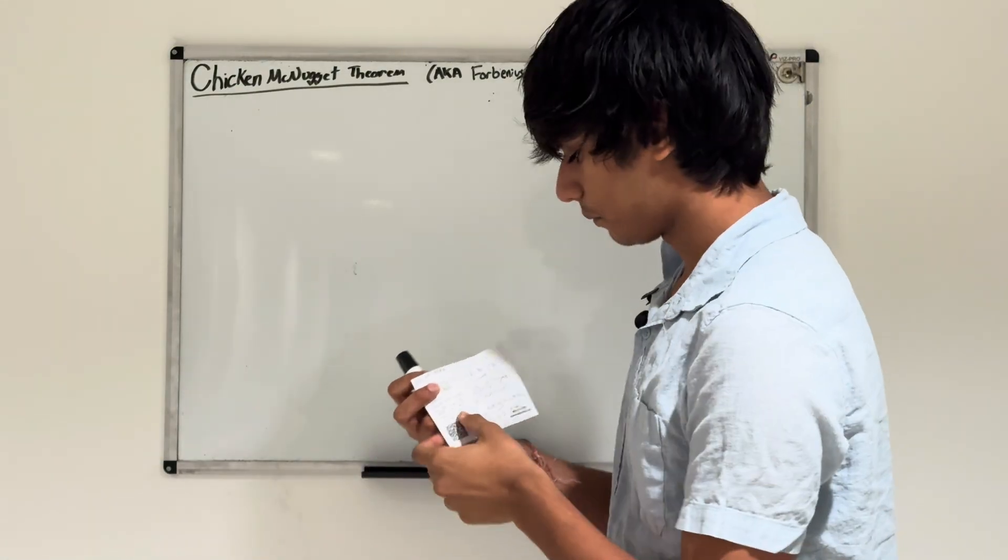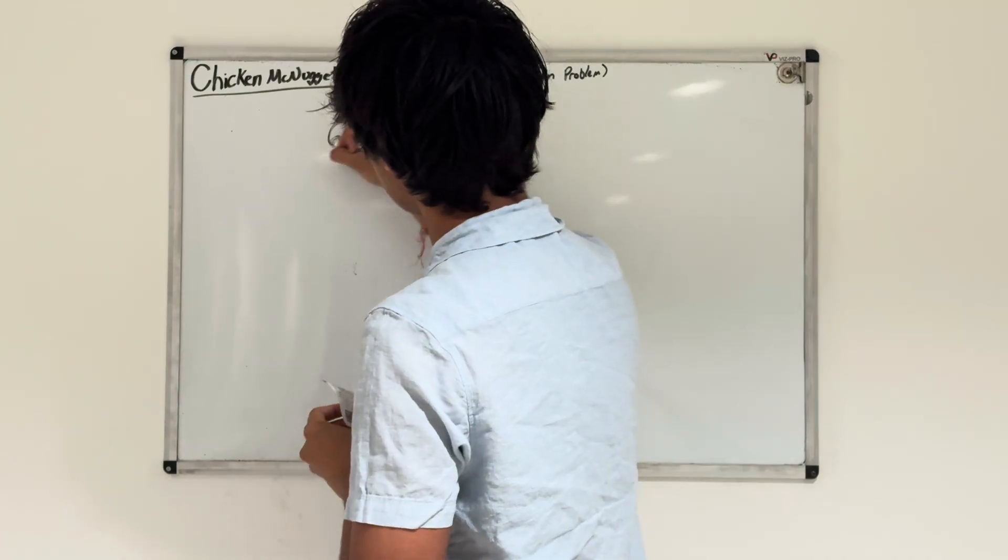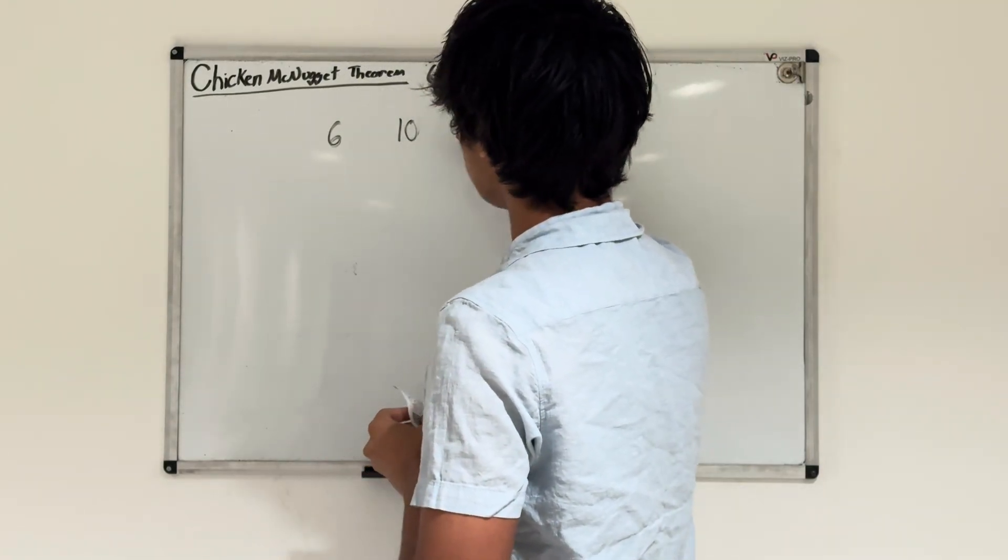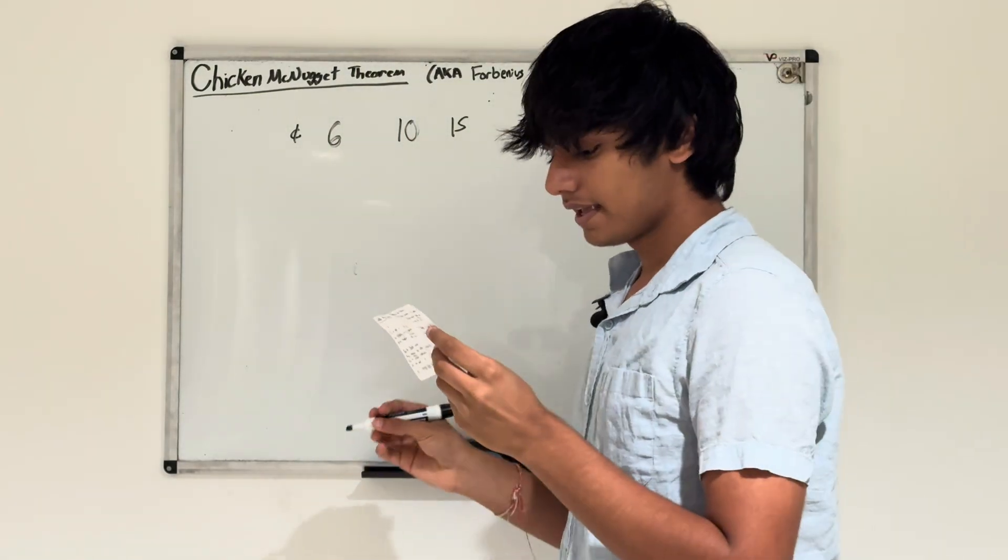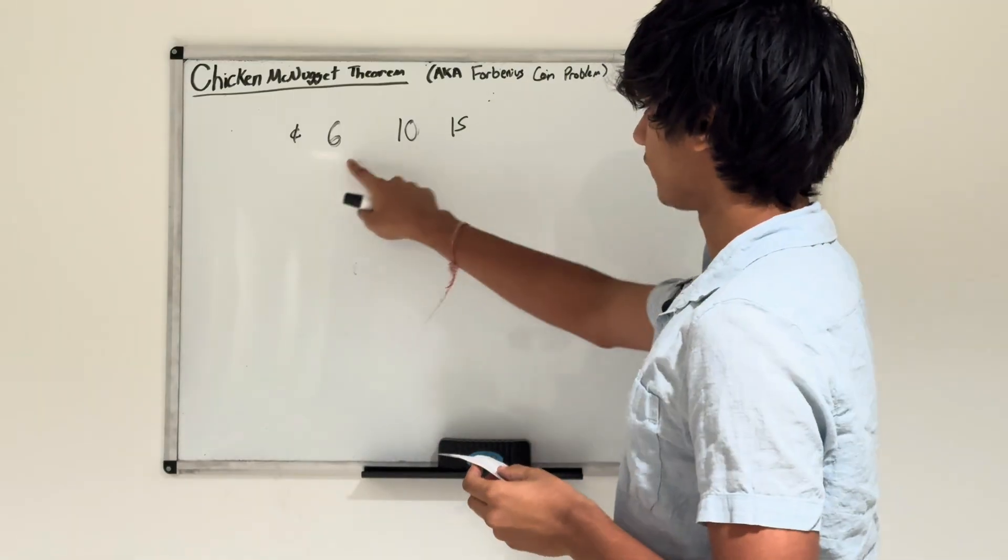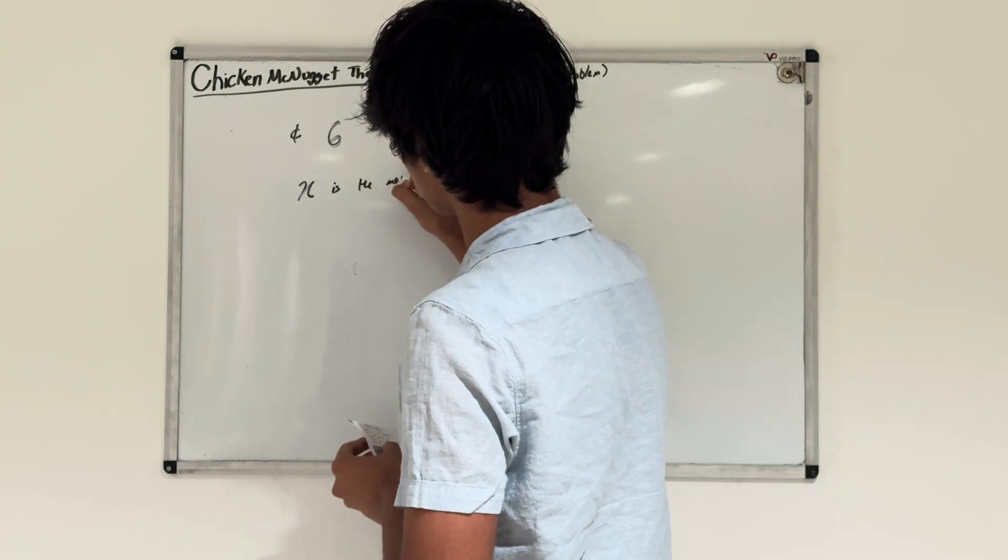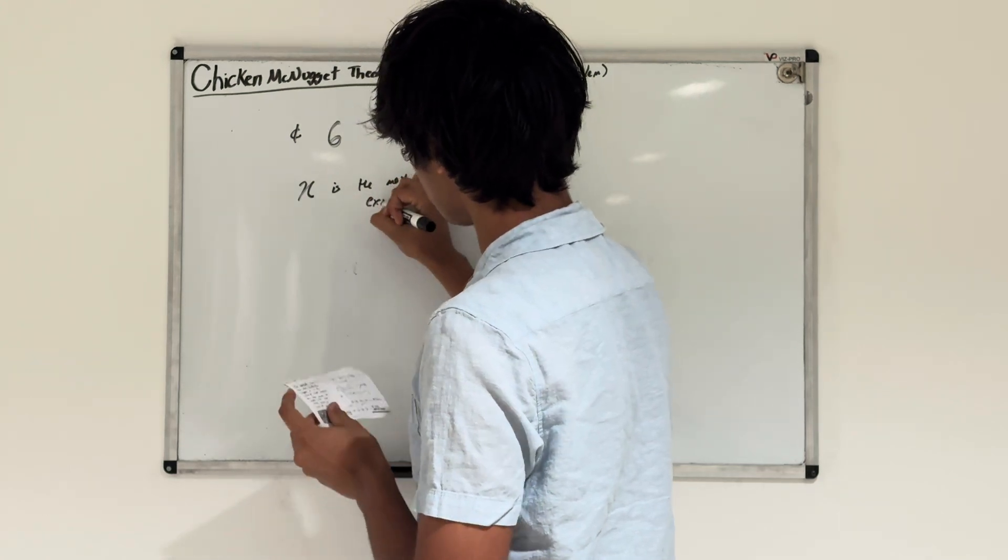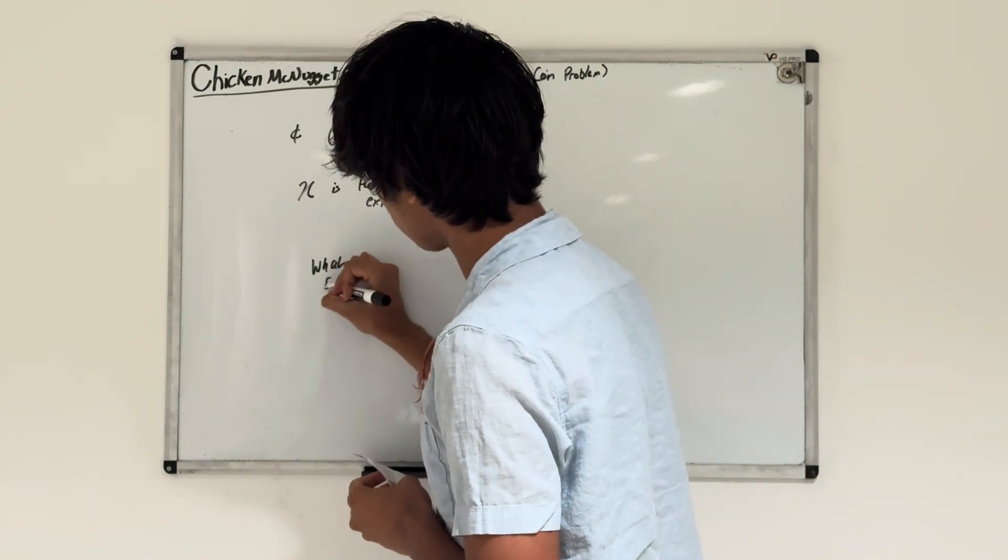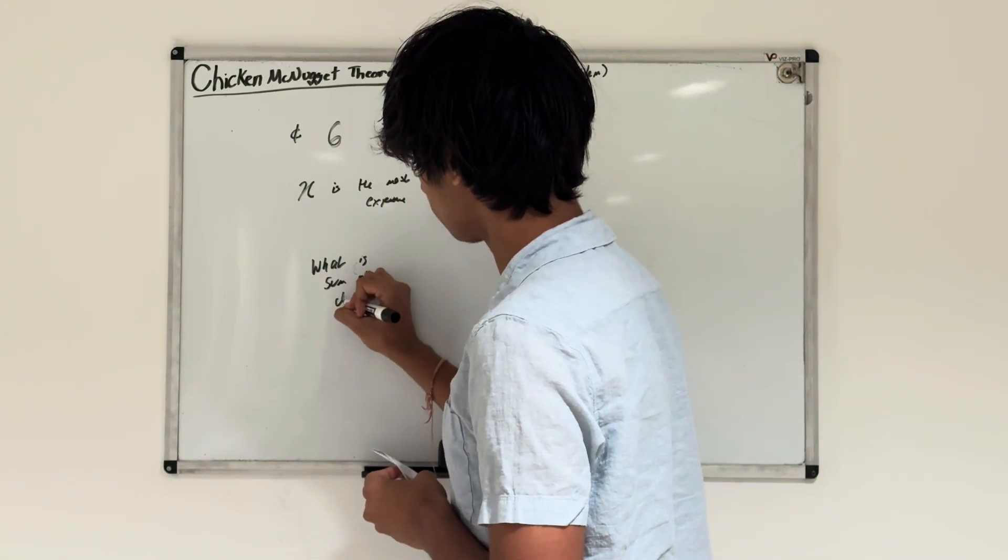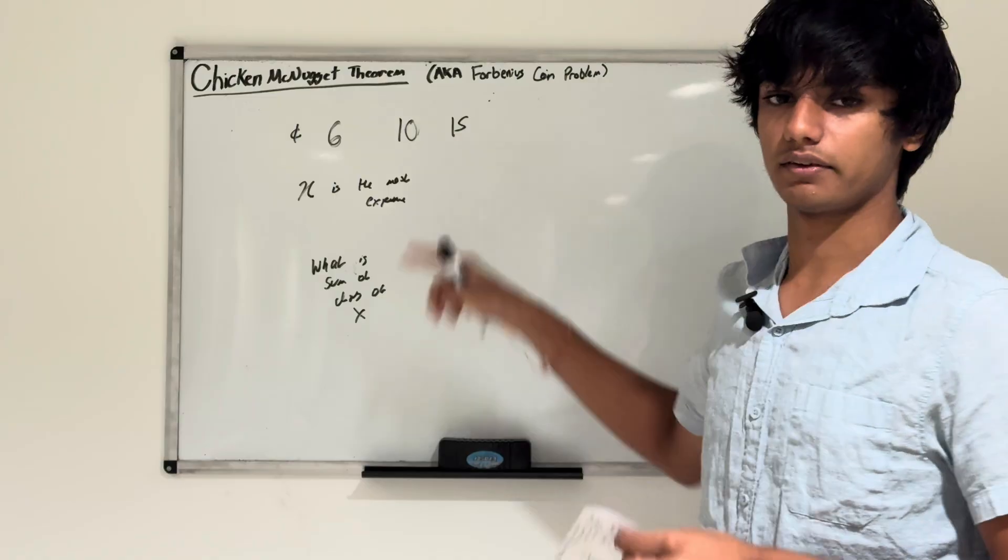This problem is problem 23 from the AMC 12B. The problem states that in coin land, coins have values of 6, 10, and 15. Suppose x is the value of the most expensive item that cannot be bought using these coin values. The question asks: what is the sum of the digits of x?